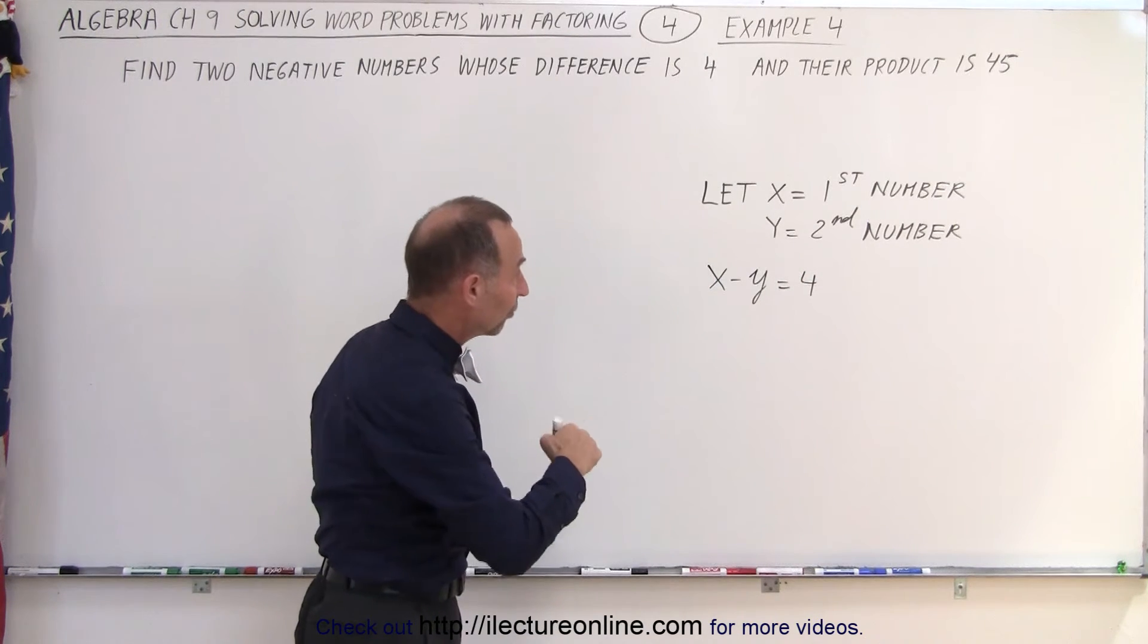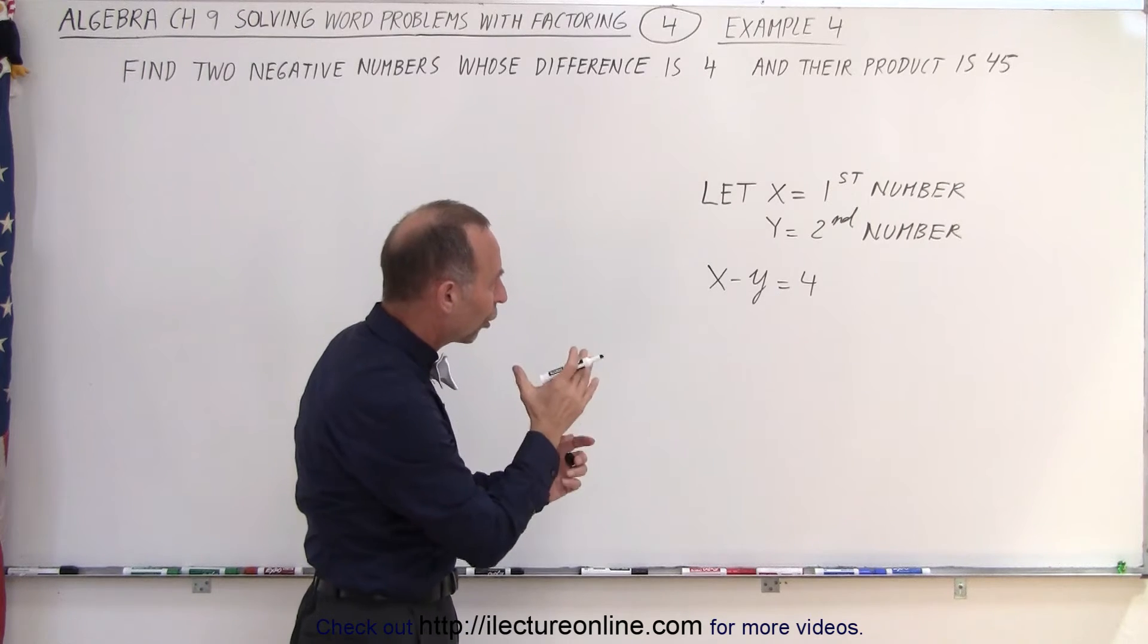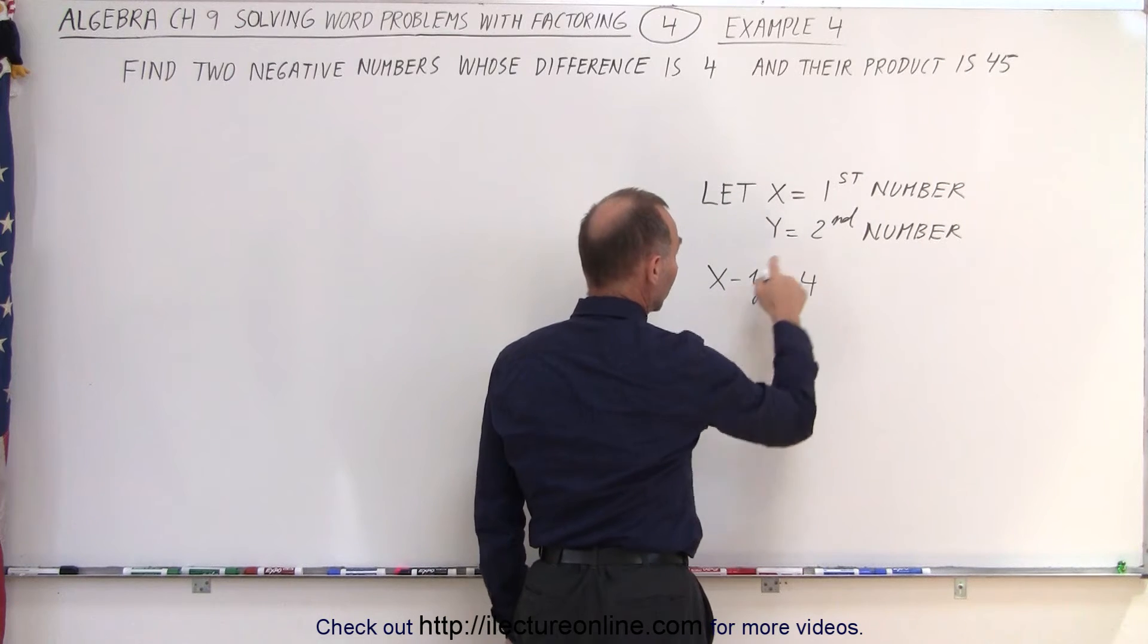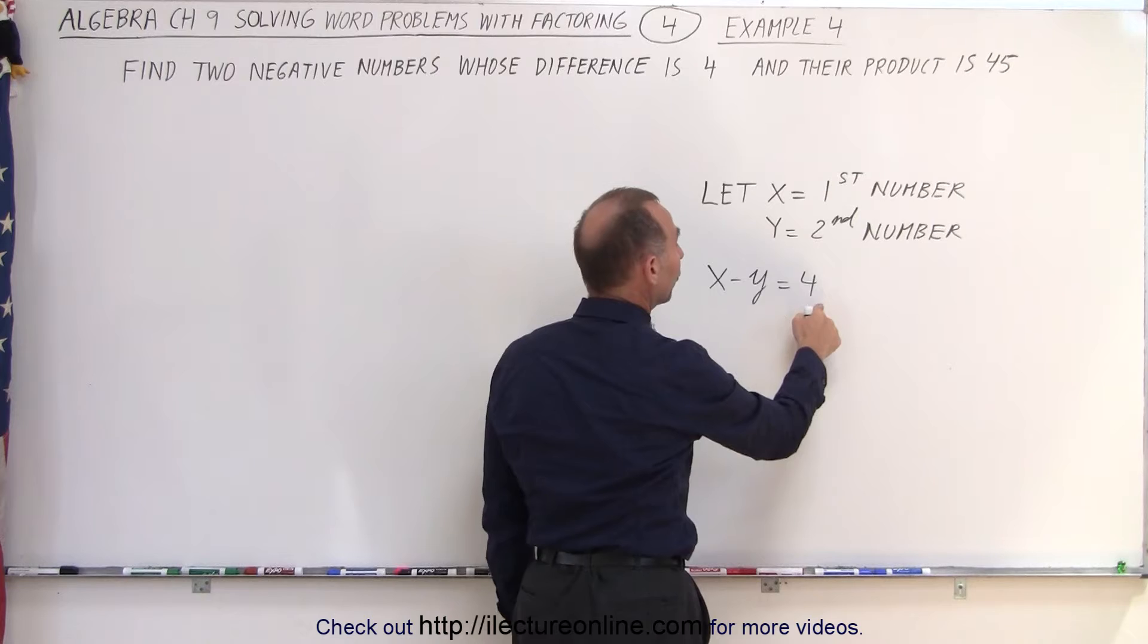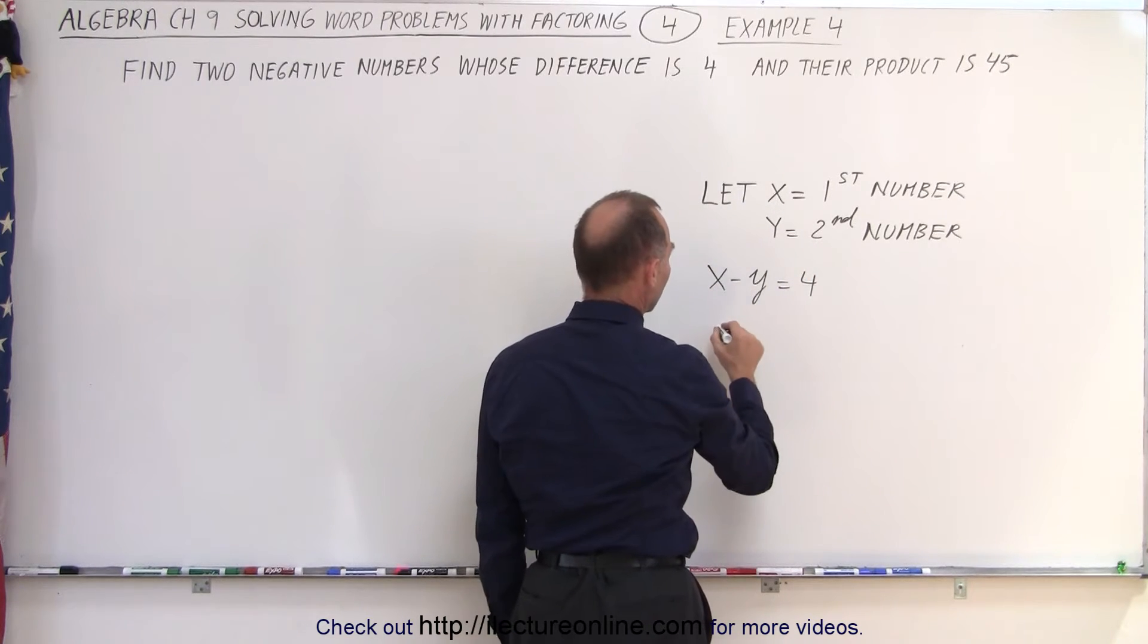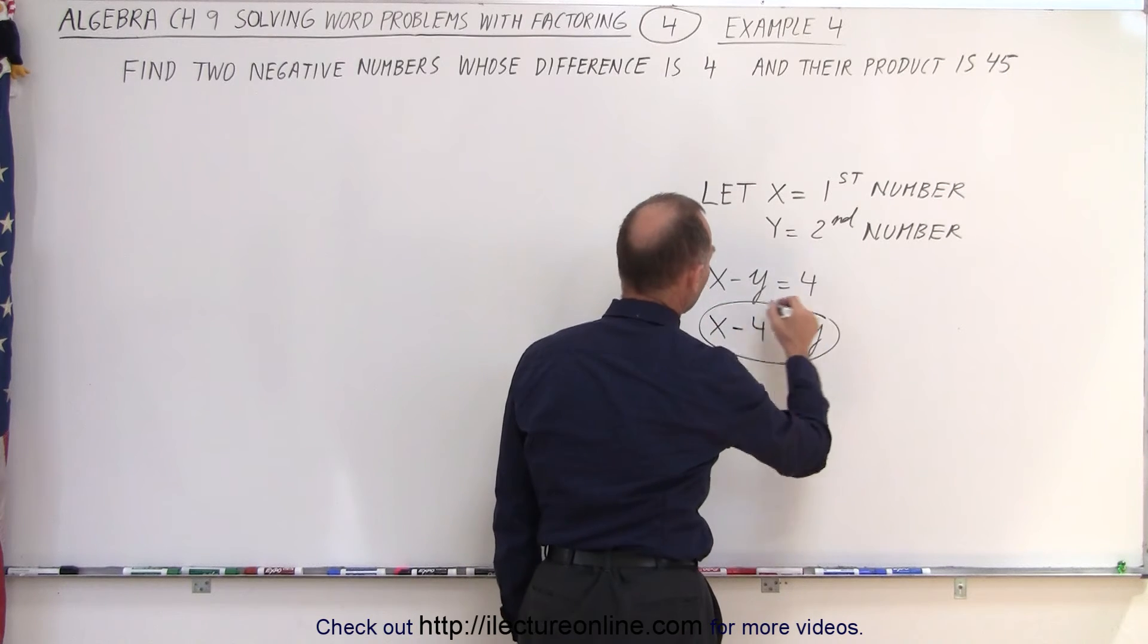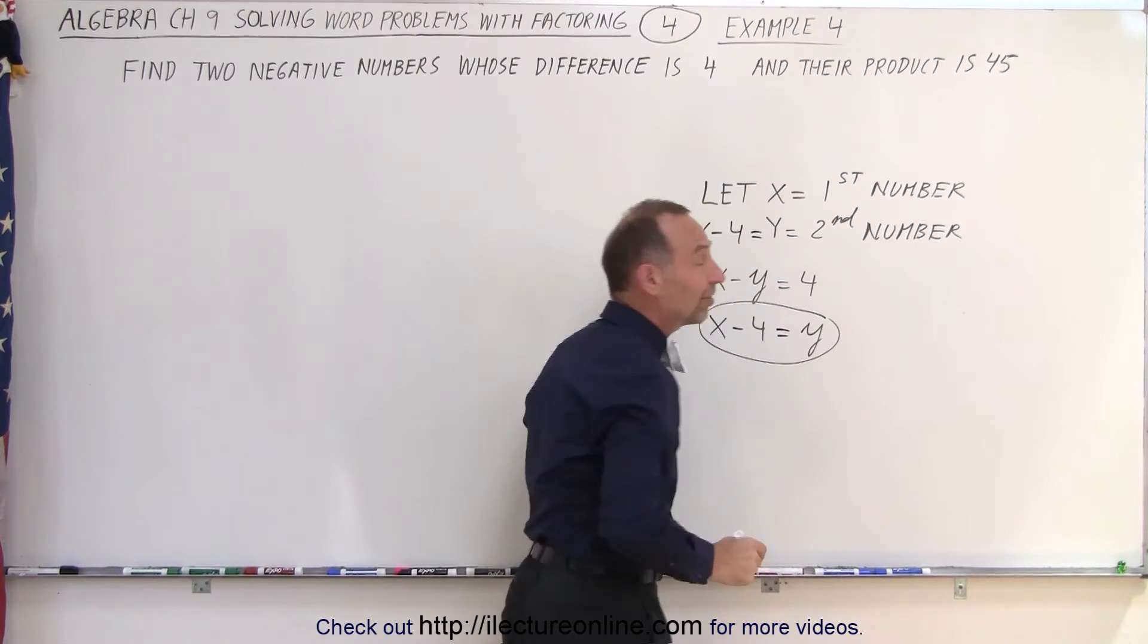Now let's use that to define the second number. The reason why I did that is because sometimes it's hard to find a way to describe the second number. So we'll let another variable be the second number. Then I'll write the equation that the difference between them is equal to 4. Now let's solve this equation for y and plug that in. So I can say that x minus 4, by bringing the 4 across, is equal to y. So therefore, I can then say that x minus 4, which is equal to y, is the second number.